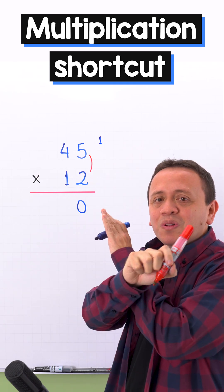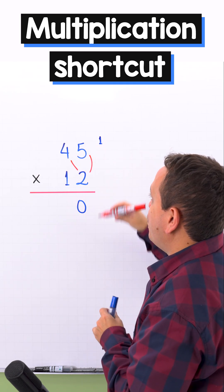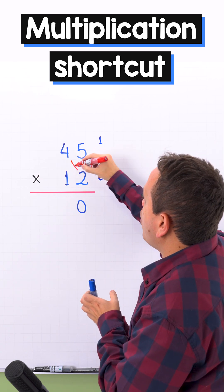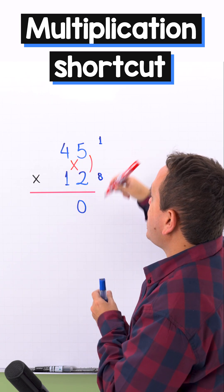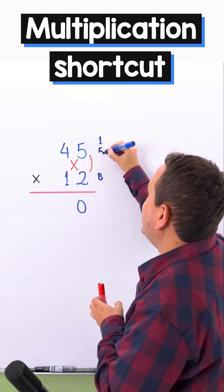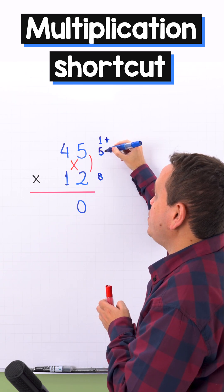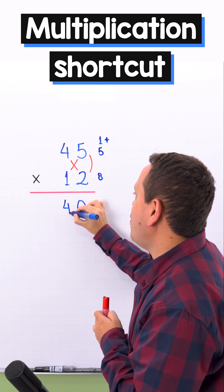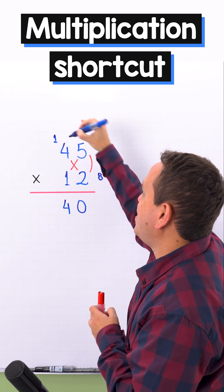It's time to cross multiply. On this side we have 4 times 2. And 4 times 2 give us 8. On the other side we have 1 times 5. And 1 times 5 equals 5. Now we add 1 plus 5 give us 6. Plus 8 give us 14. I'm going to write the 4 and carry the 1 to the next column.